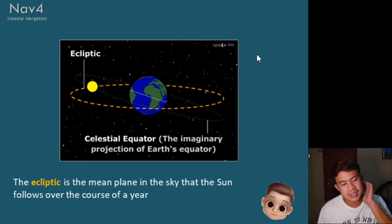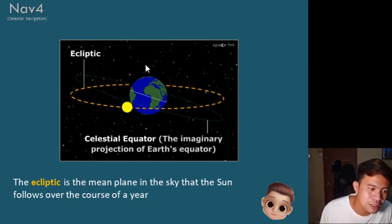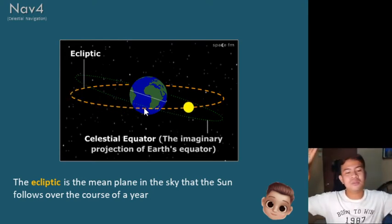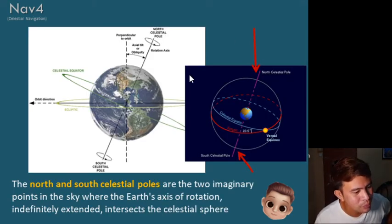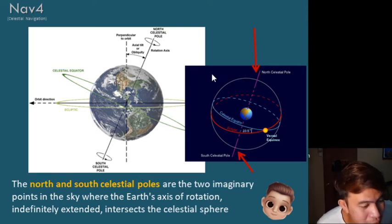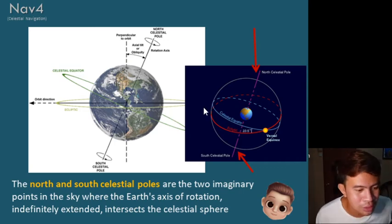The ecliptic is the mean plane in the sky that the sun follows over the course of the year — the apparent path of the sun as perceived by an observer from the Earth. The North and South Celestial Poles are two imaginary points in the sky where the Earth's axis of rotation, indefinitely extended, intersects the celestial sphere. Simply extend the Earth's north pole upward along the axis of rotation — that becomes your North Celestial Pole — and likewise for the South Celestial Pole.